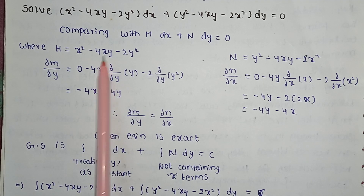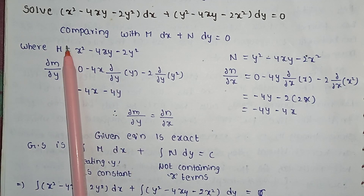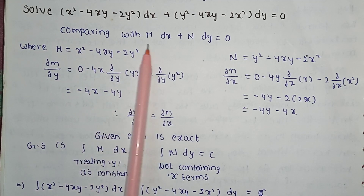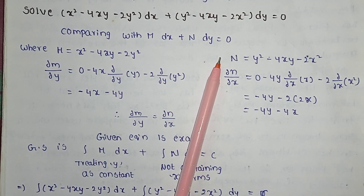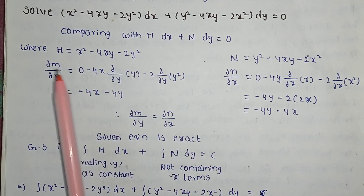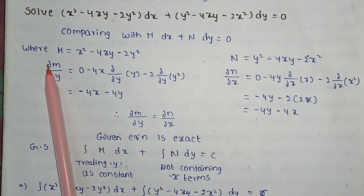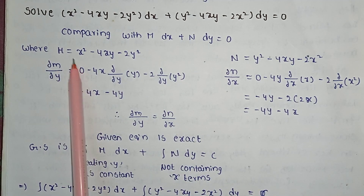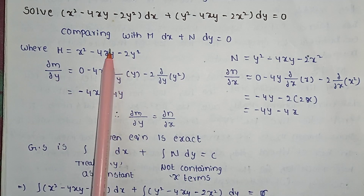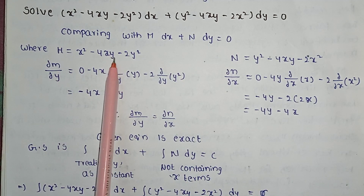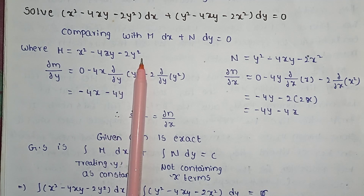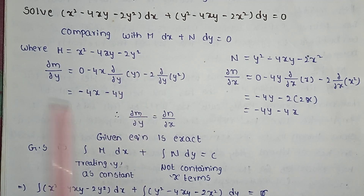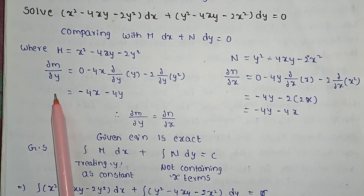Given the equation, comparing it with M dx + N dy = 0, where M is equal to x² - 4xy - 2y². Now we will find the partial differential.